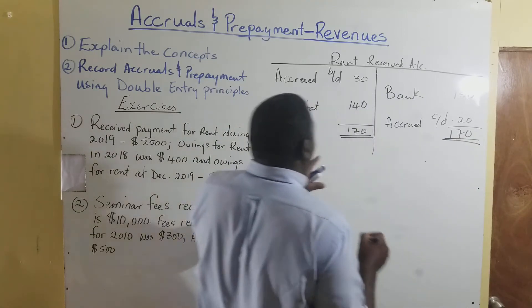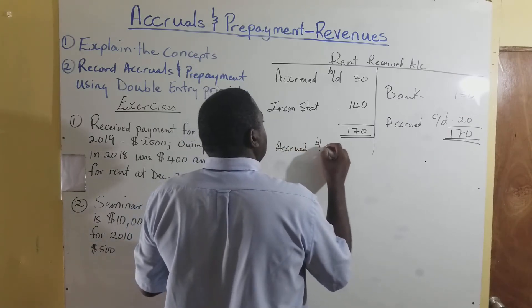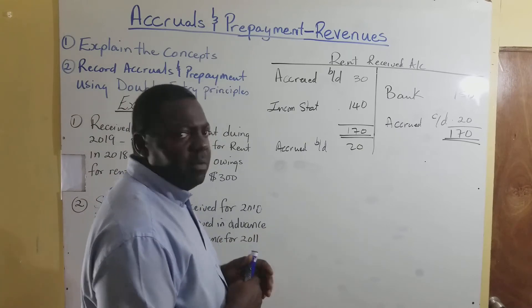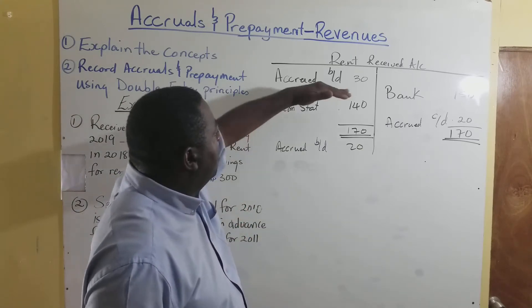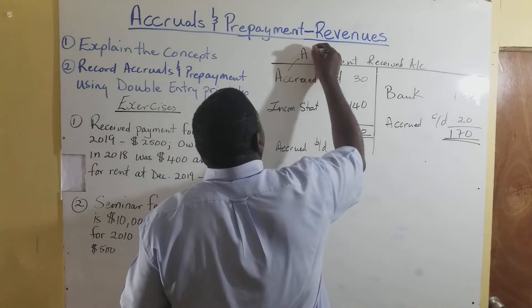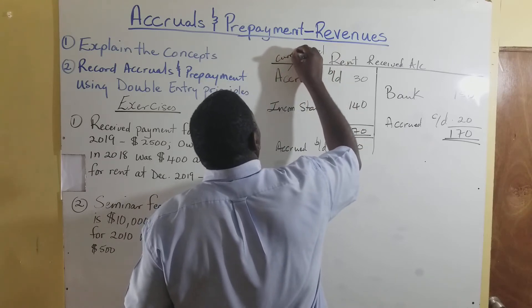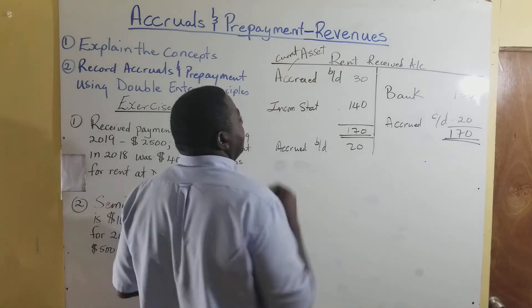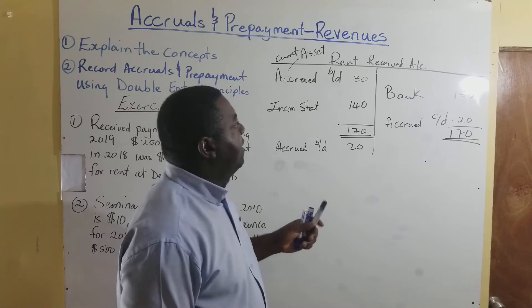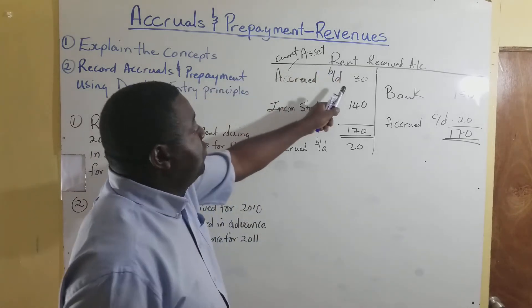The CD comes over and becomes a BD accrued. So what we are seeing here is that the opening accrued is an asset — a current asset. That's an example of treating accrued revenue.